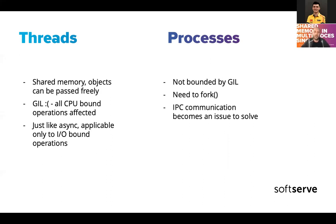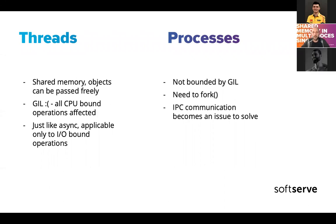The GIL allows only a single bytecode operation to be executed at once. This effectively means we cannot go out of our core process and process things in true parallel. From another perspective, threads are a really convenient way to do things in parallel or asynchronous manner. One advantage is shared memory — we can just have an object in our Python interpreter and pass it as-is, without caring about how the OS will treat it.